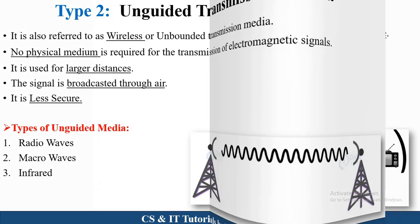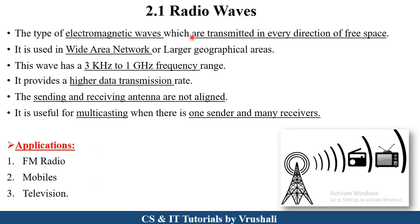The first type is radio waves. You can see this kind of network tower or pillar in a particular area — they transmit information in every direction. Multiple devices like FM radio, mobiles, and televisions are all wirelessly connected to that particular tower. Radio waves are generally used in wide area networks where larger geographical areas are involved, with a higher data transmission rate. Their frequency range is 3 kilohertz to 1 gigahertz. It is useful for multicasting — meaning one sender and multiple receivers.